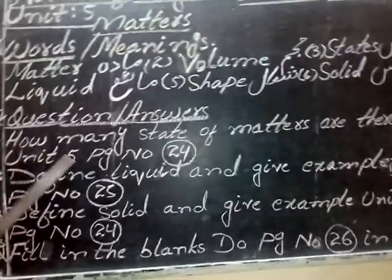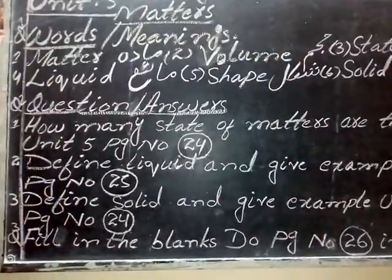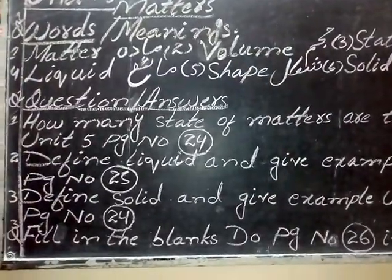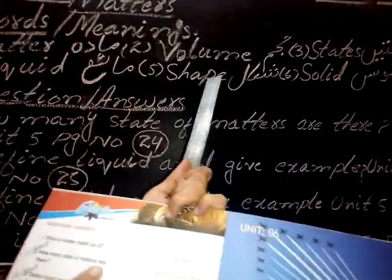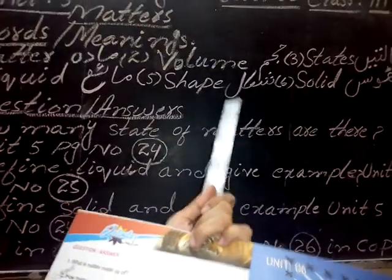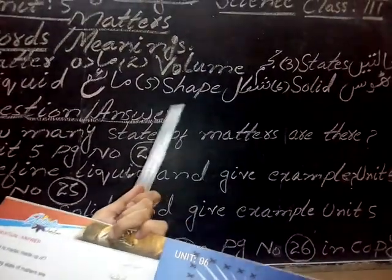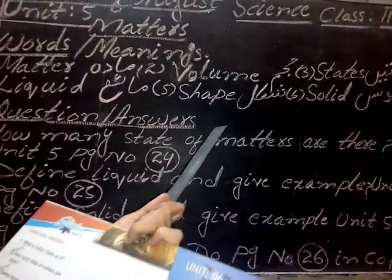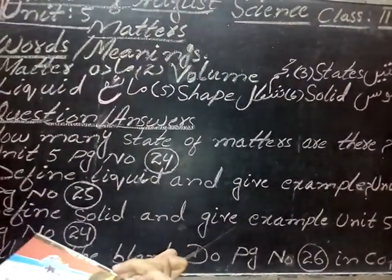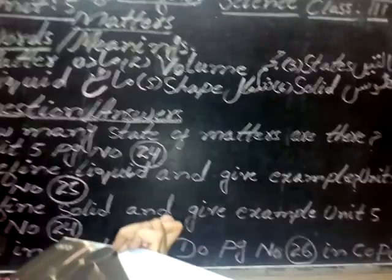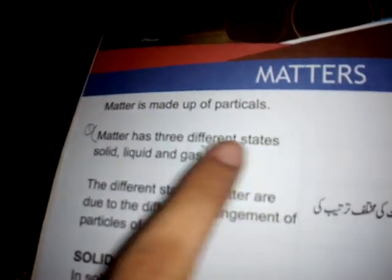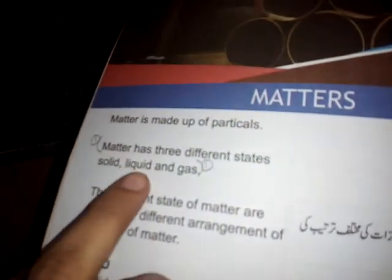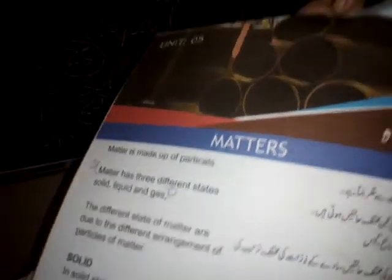Question answer: How many states of matter are there? Unit number 5, page number 24. Matter has 3 different states: solid, liquid, and gas.